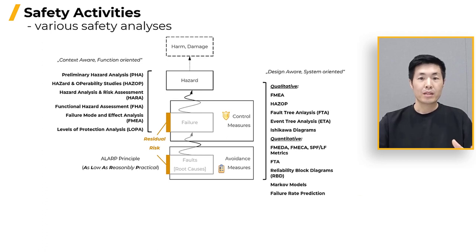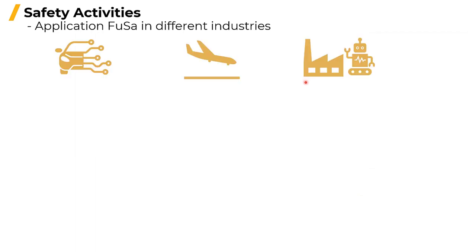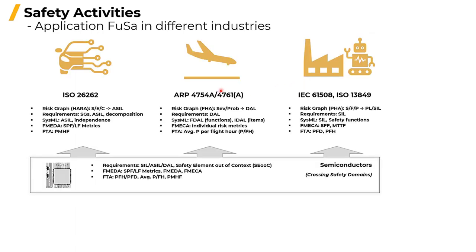The implementation of functional safety across industry follows a similar pattern. In essence, the risk classification rating is ASIL for automobiles, DAL for civil aircraft, and SIL for general industry. While the terminology may vary slightly, the underlying activity remains consistent. We will dive deeper into this aspect in the subsequent section for a more detailed explanation.